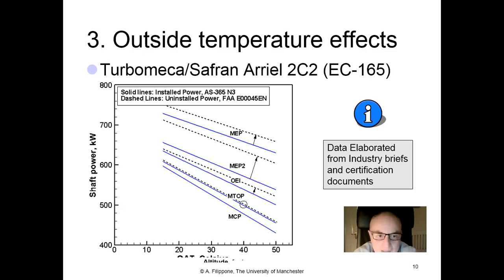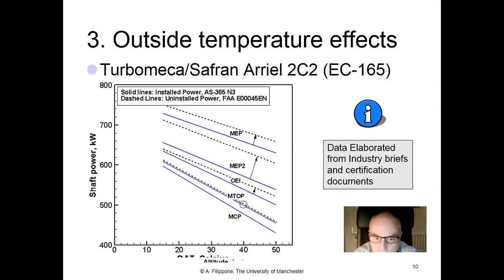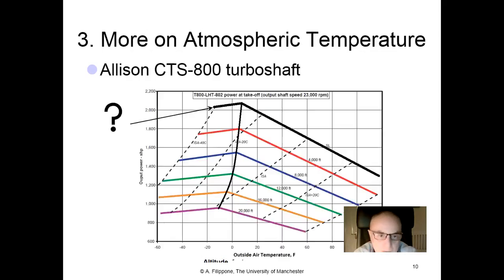The dashed lines in the chart represent uninstalled power taken from an official FAA engine certification document (engine type certificate 45EN). These give a clear picture of the effect of outside air temperature at constant altitude with speed equal to zero.